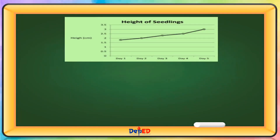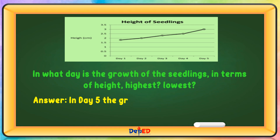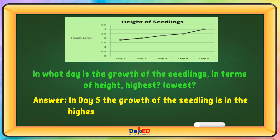In what day is the growth of seedlings in terms of height highest and lowest? In Day 5, the growth of seedlings is the highest, while in Day 1 it is the lowest.